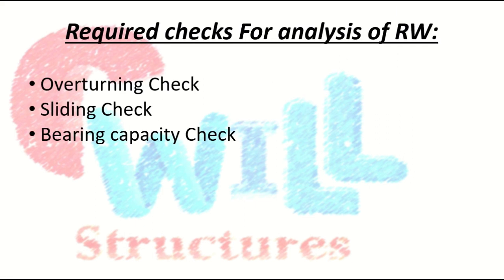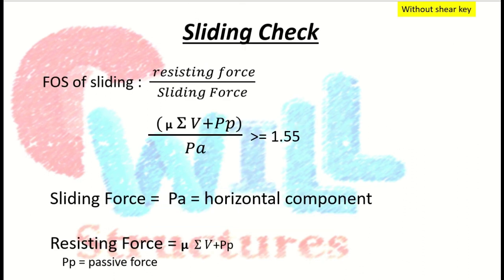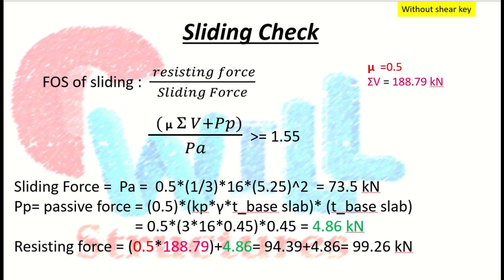The formula for factor of safety against sliding is resisting force divided by sliding force. The sliding force is the active earth pressure Pa = 73.5 kN. The resisting force = μ × ΣV + passive earth pressure, where the μΣV term is the frictional force acting at the base between concrete and soil, and passive earth pressure provides additional resistance.